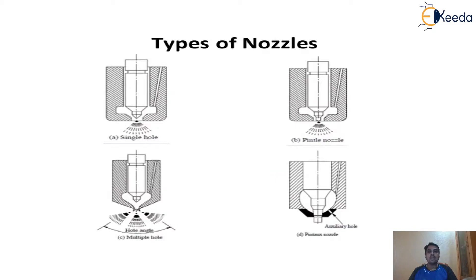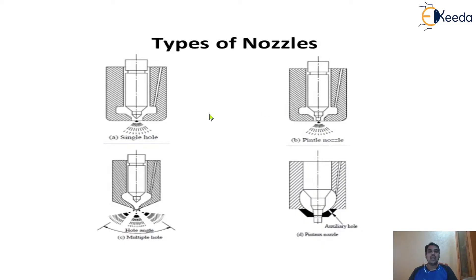Now we are going to discuss about the different types of nozzles. There are four basic types: the single hole nozzle, the pintle nozzle, the multi-hole nozzle, and the Pintox nozzle. Every nozzle has some speciality and because of that speciality it is named as that particular nozzle.